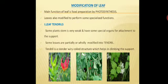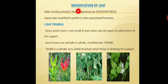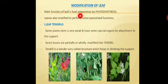Next is modification of leaf. The main function of the leaf is photosynthesis — preparation of food. But why do leaves modify? Especially, modifications perform specialized functions for the plant's survival. This is called modification of leaf. Modifications include several categories: leaf tendrils, leaf spines, leaf hooks, leaf bladders, storage leaves, pitchers, phyllodes, and floral leaves.